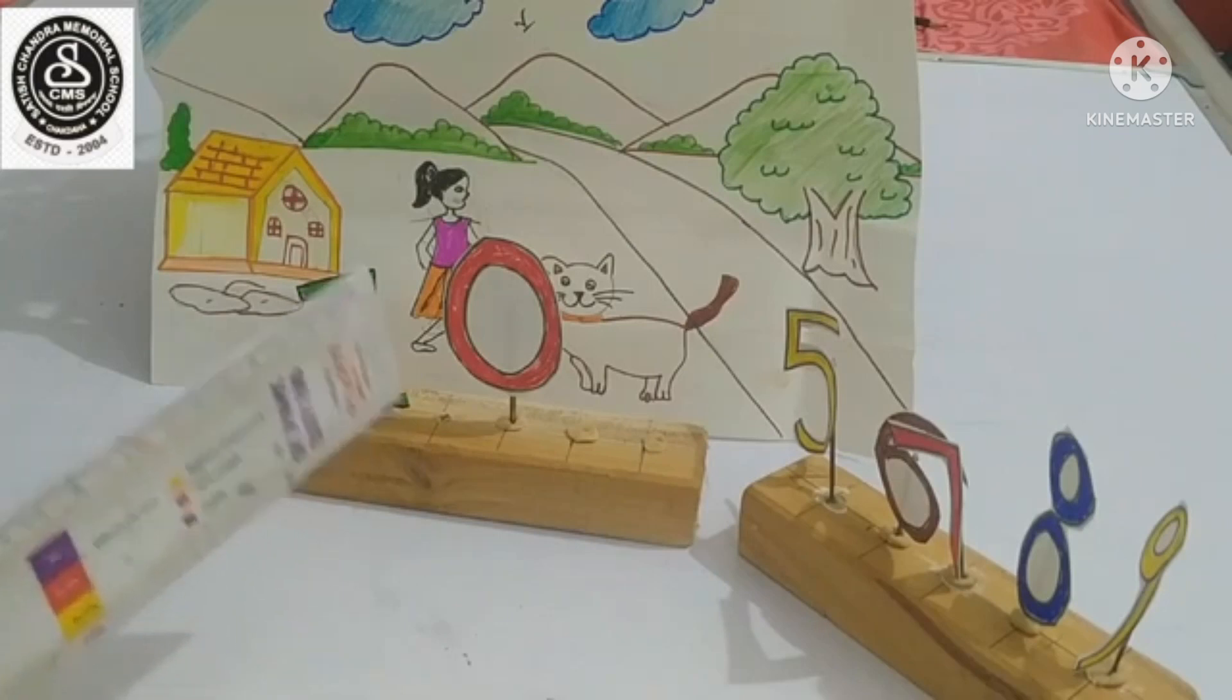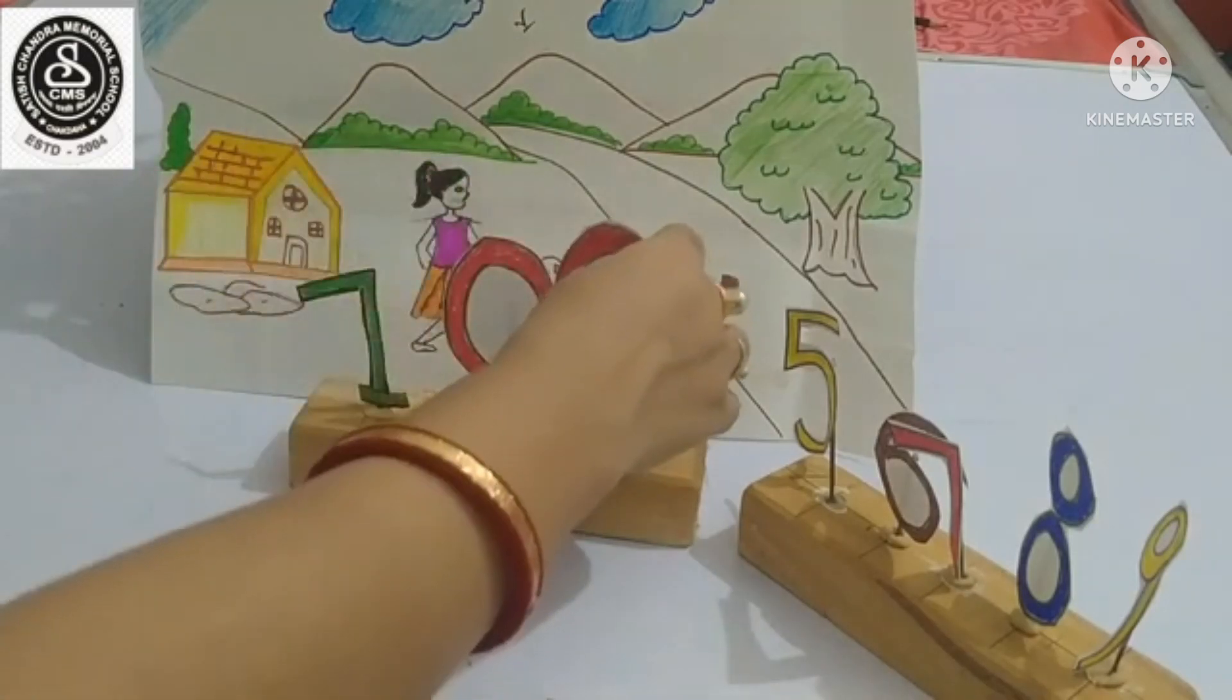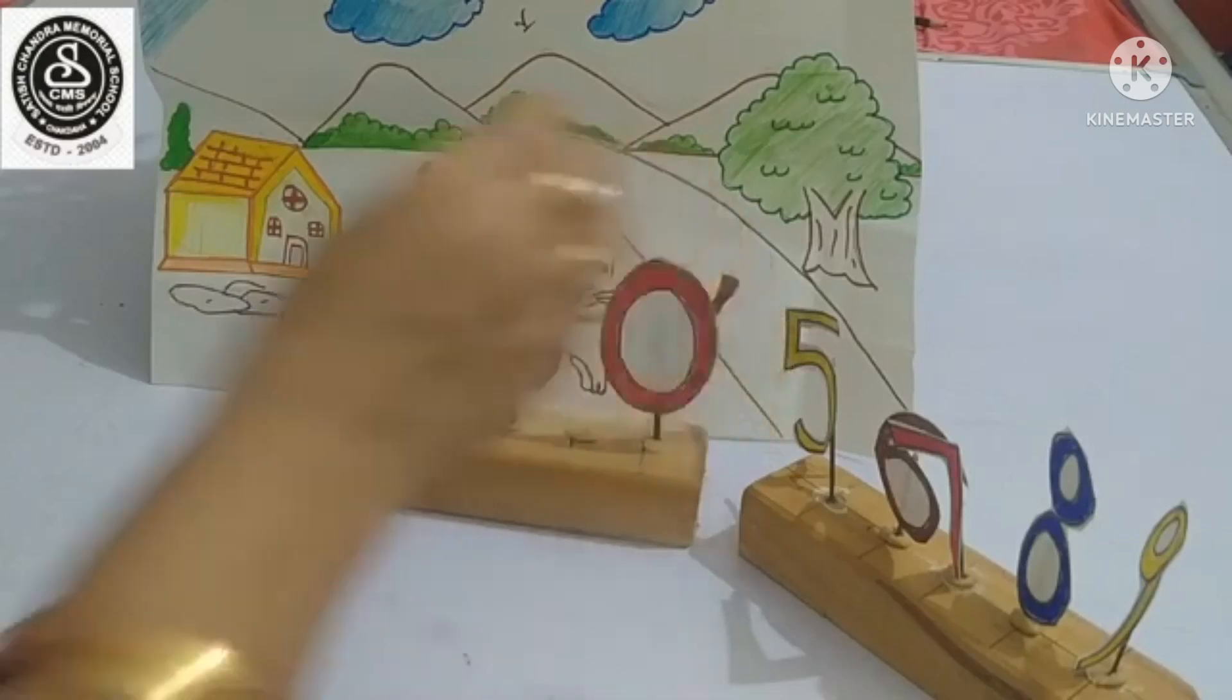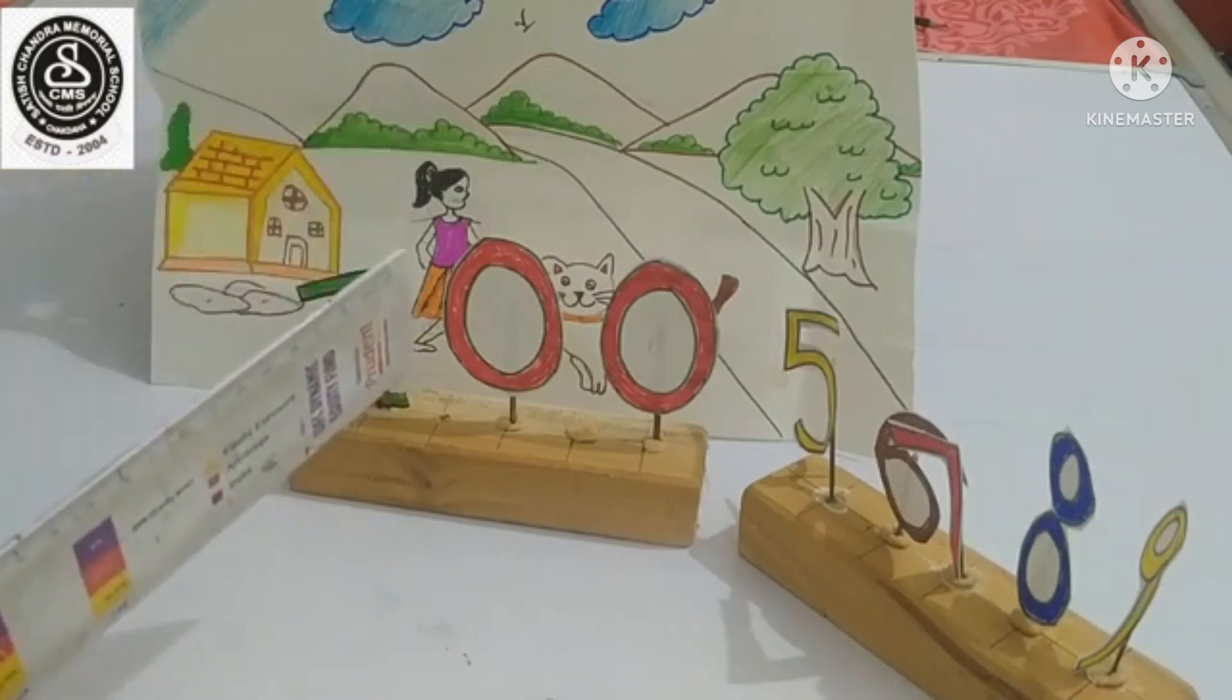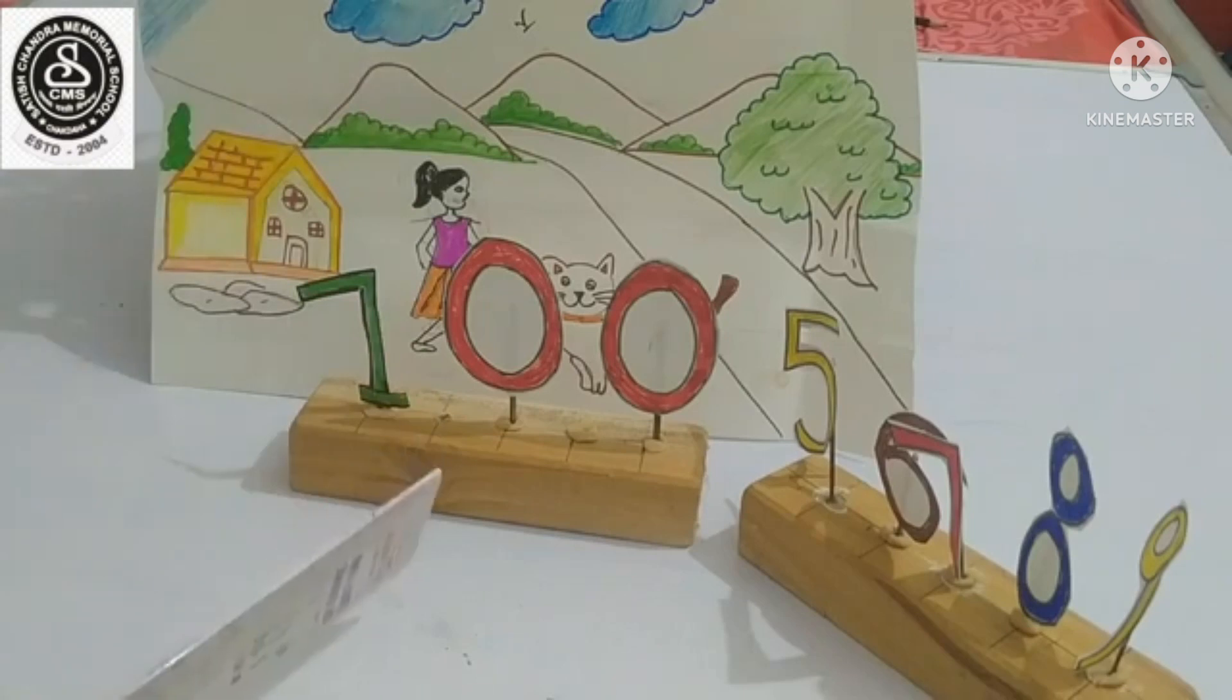The teacher added one more zero and asked, now what is the value? So, all the numbers started shouting, hundred, hundred, hundred. Now, zero became a hero.